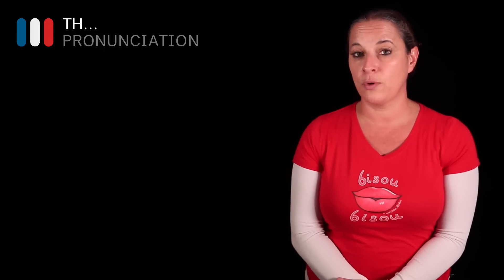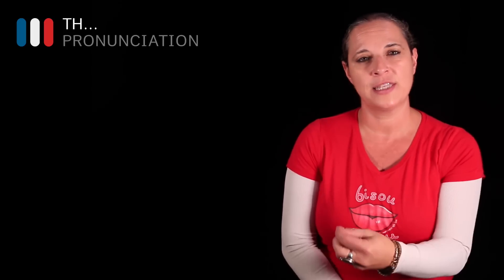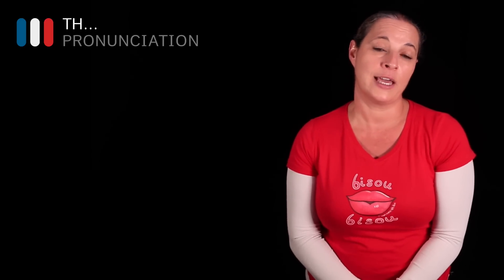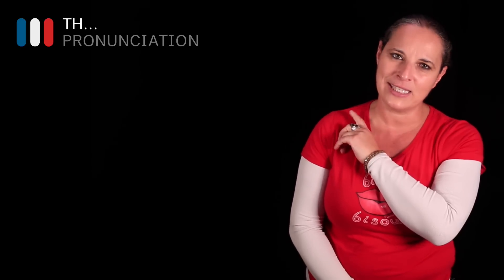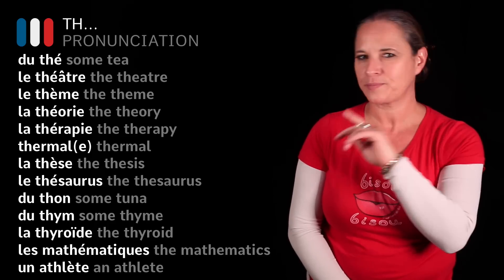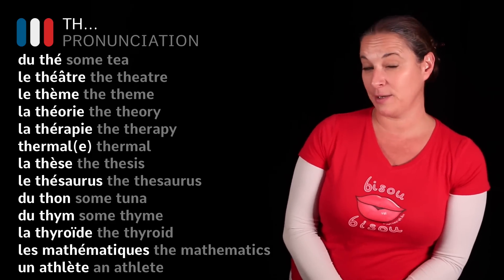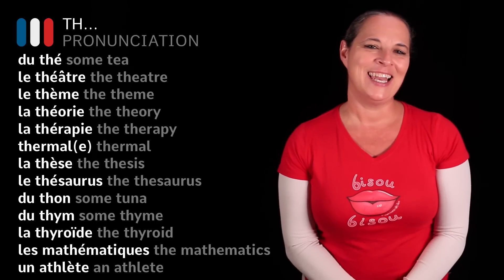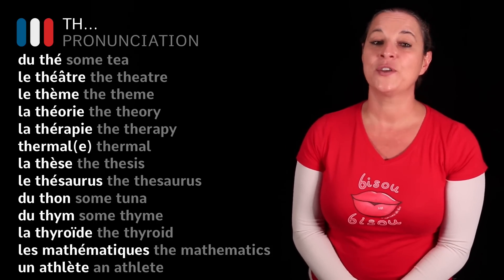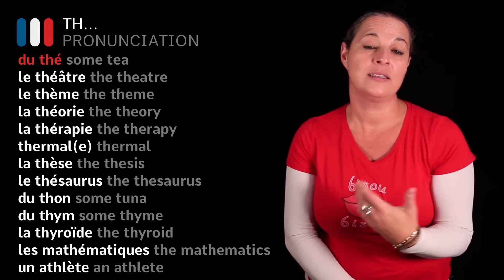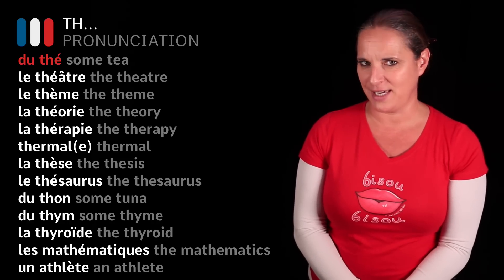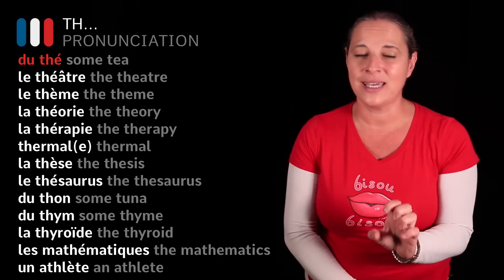I'm going to show you a few examples — French words with TH in them — and we're going to learn how to pronounce them. Maybe you can try before I even begin. Would you feel confident that you can pronounce these words? Let's have a look at the first one: DU THÉ — and that's a T as in a cup of tea. T-H-E: TE.